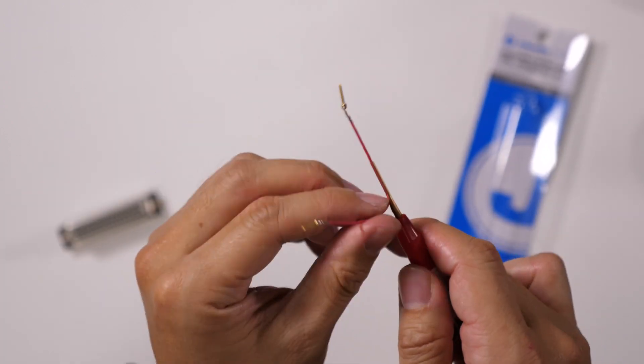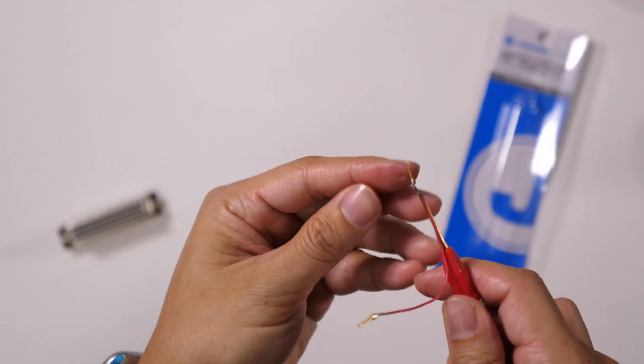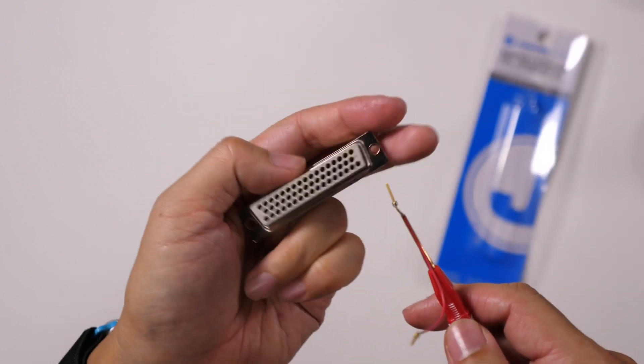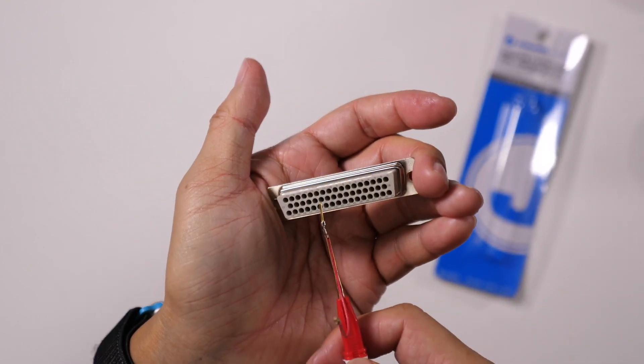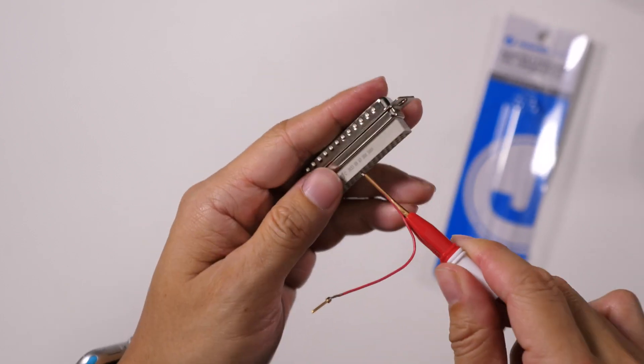Okay, once it's in there, you want to slide it towards the end there, and then take your D-Sub connector. For example, if I want to insert it into pin 10, I would just push it in like that.